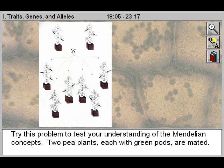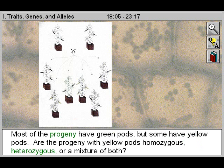Try this problem to test your understanding of the Mendelian concepts. Two pea plants, each with green pods, are mated. Most of the progeny have green pods, but some have yellow pods.